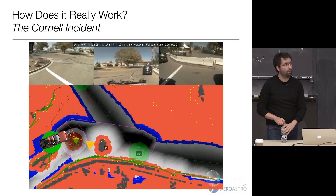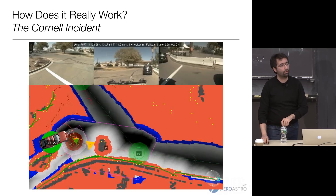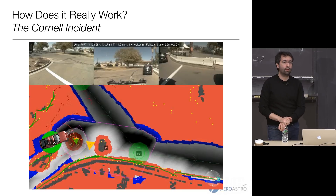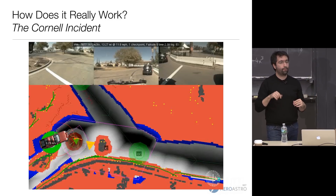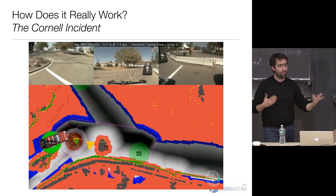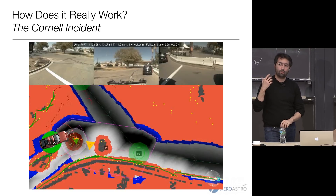A question came up about whether the simulation environment and actual development environment were separate. Ours were not separate back then — it was one platform where you could run the whole software stack. If you started a simulator, it would simulate all sensor data. If you didn't, processes would wait for real data to come in — so you could put it on a real vehicle. Back then we thought that would be the best approach.